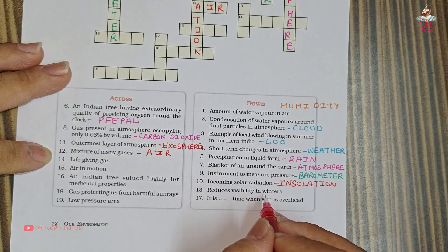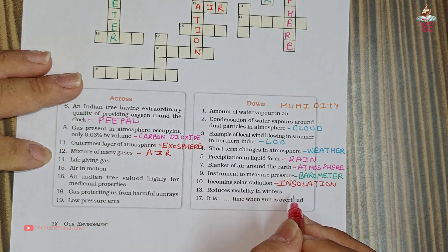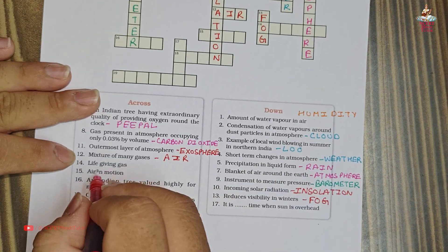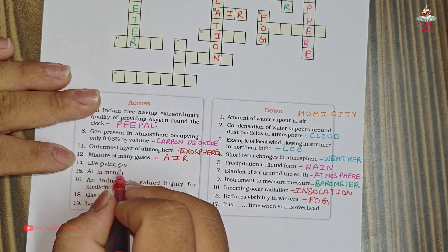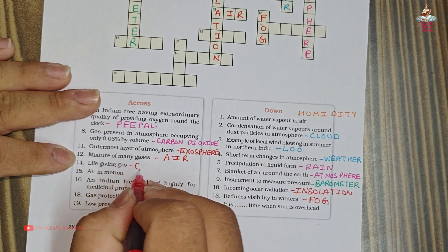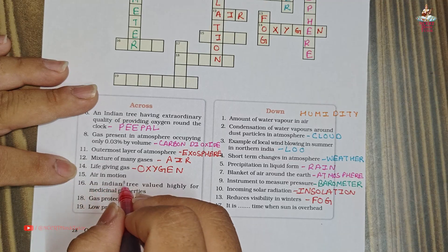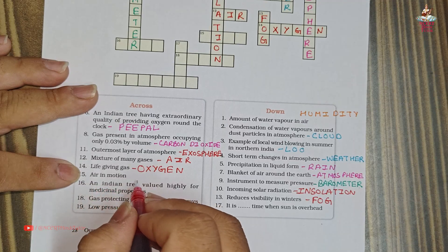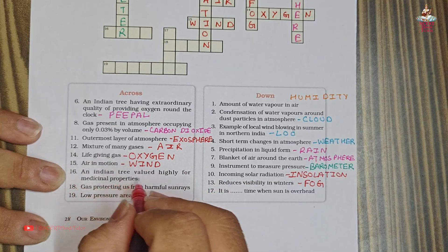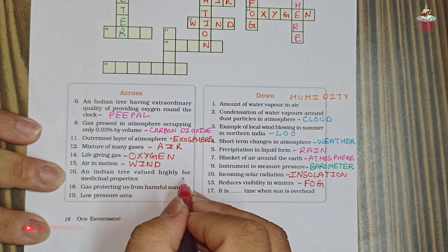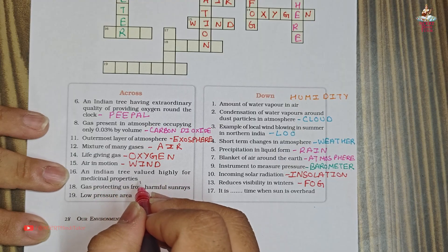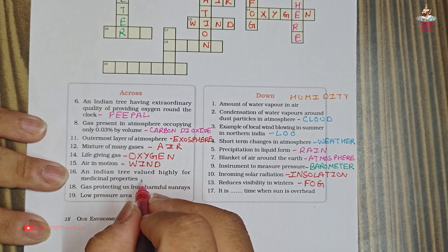Thirteenth clue: reduces visibility in winters. Answer: Fog. Fifteenth clue: air in motion. Answer: Wind. Sixteenth clue: an Indian tree valued highly for medicinal properties. Answer: Neem.